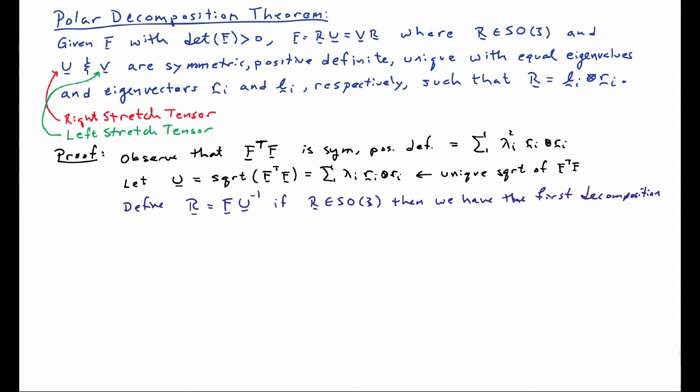Now define R to be F U inverse. If I can show that R is a rotation — an element of SO(3) — then we'll have the first decomposition, namely F equals RU. To check, compute R transpose R: it equals U inverse transpose F transpose F U inverse. Since U is symmetric, U inverse transpose is just U inverse, and F transpose F equals U squared by definition, so R transpose R equals the identity. It is straightforward to show the determinant of R is plus one, confirming R is in SO(3). This completes the first part: F equals RU, where U is unique.